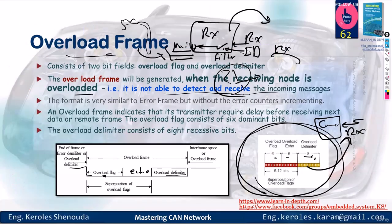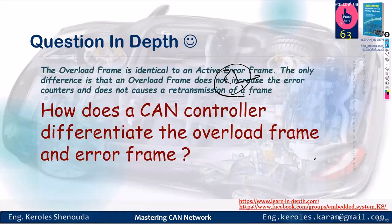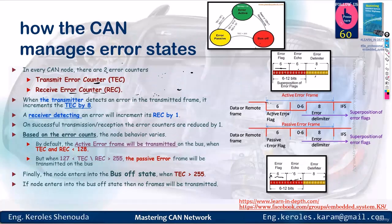The only difference is that the overload frame doesn't increase the error counter and doesn't cause a retransmission of a frame. What does this mean? It means that for both the active error and the passive error, when I send a frame representing either of them, don't I send it after I increment the error counter based on whether it's in transmission or reception? So it tells you that the overload frame and the active error frame are the same.